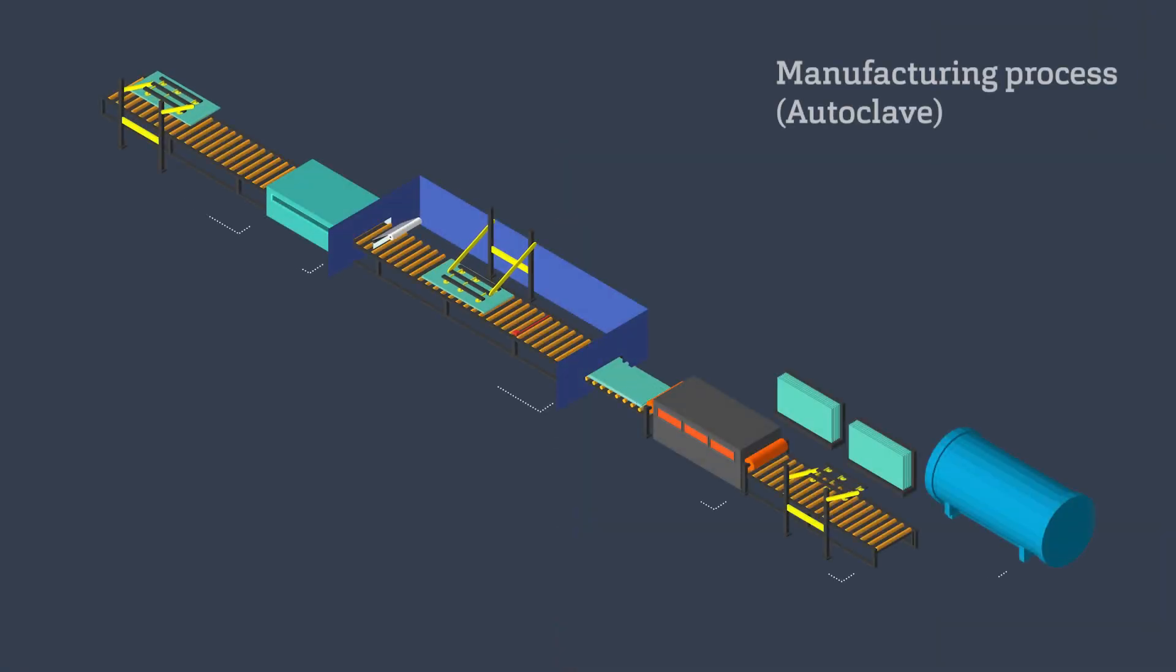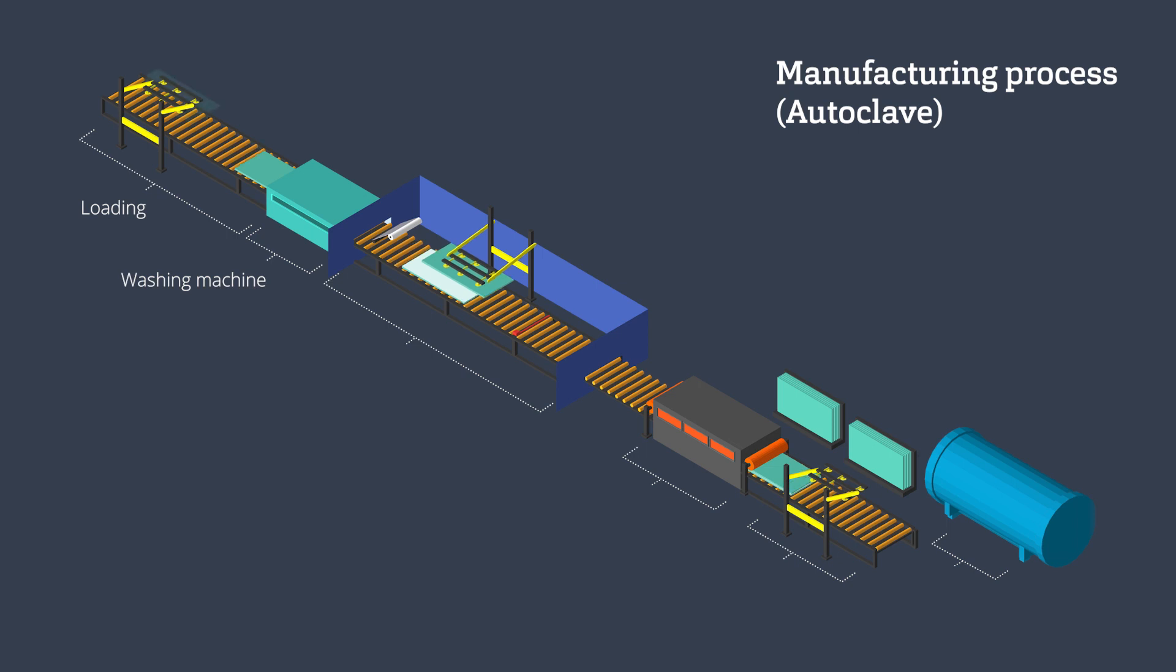Laminated glass is produced typically using an autoclave process. Two or more carefully cleaned glass panes, each with one or more layers of polymer interlayers, are positioned on top of each other in a clean room.